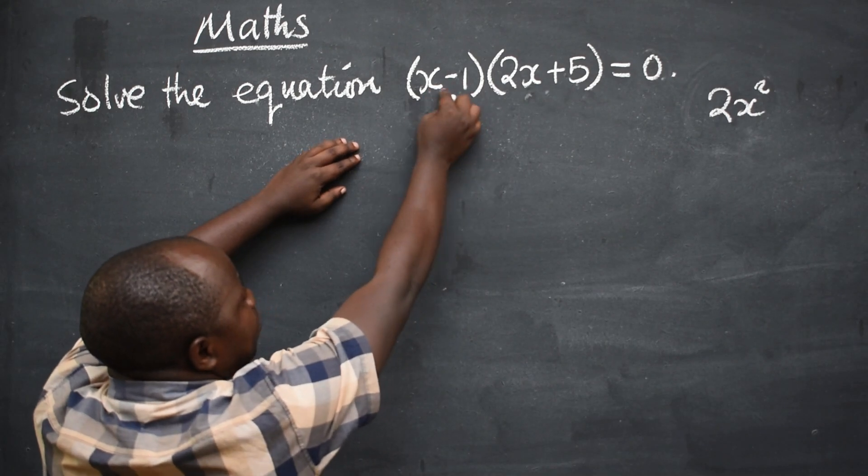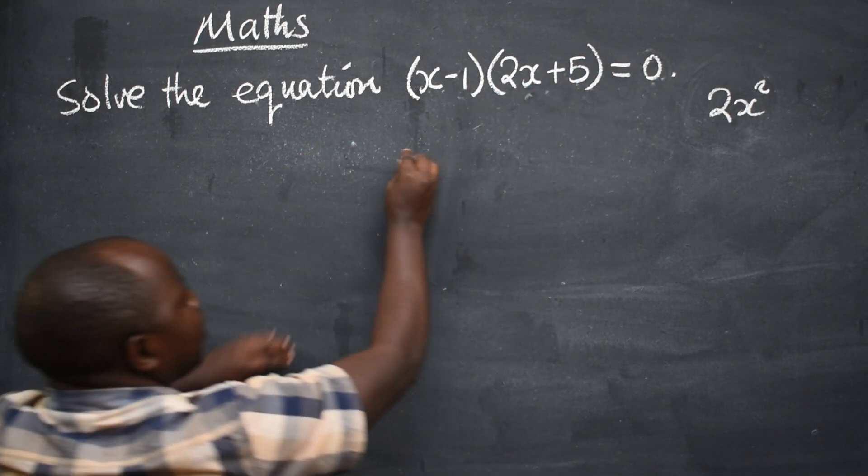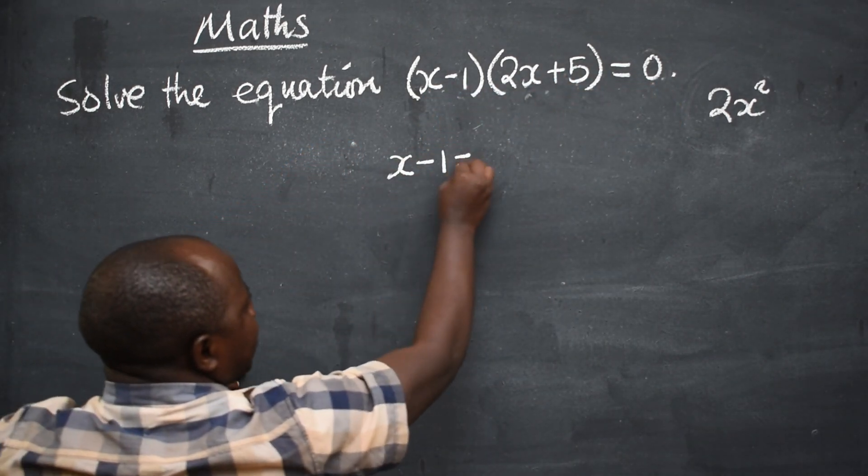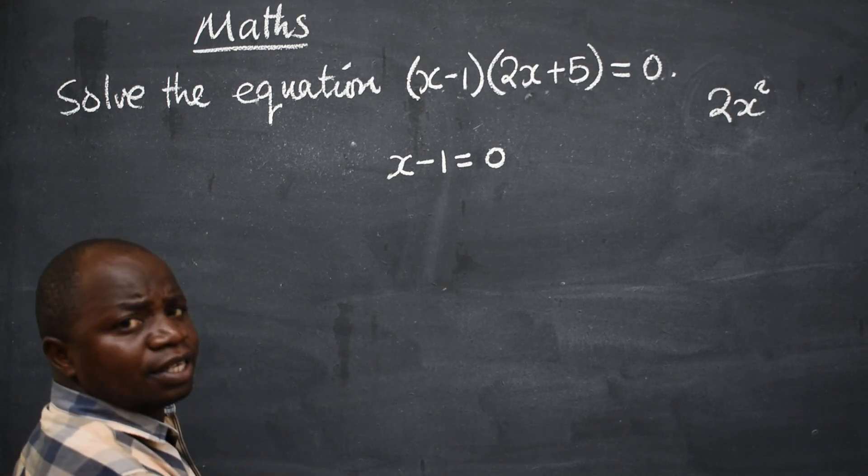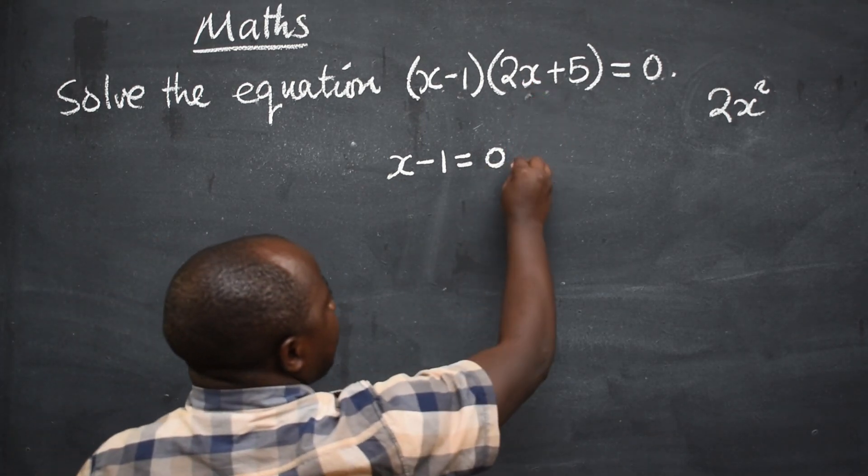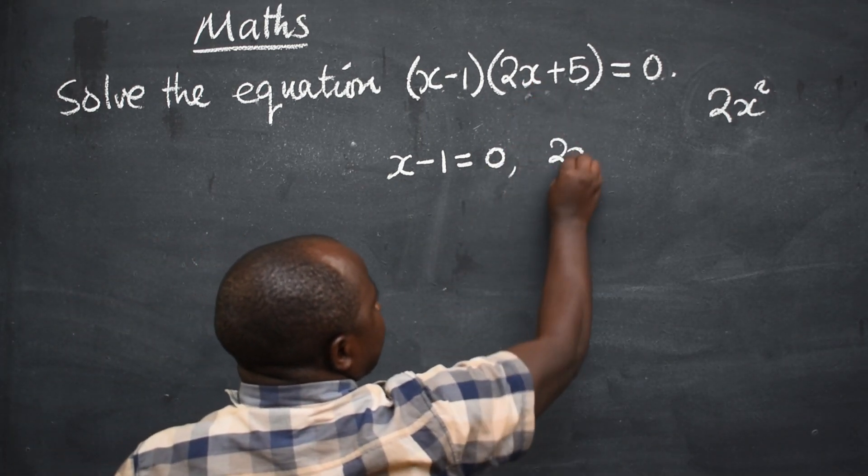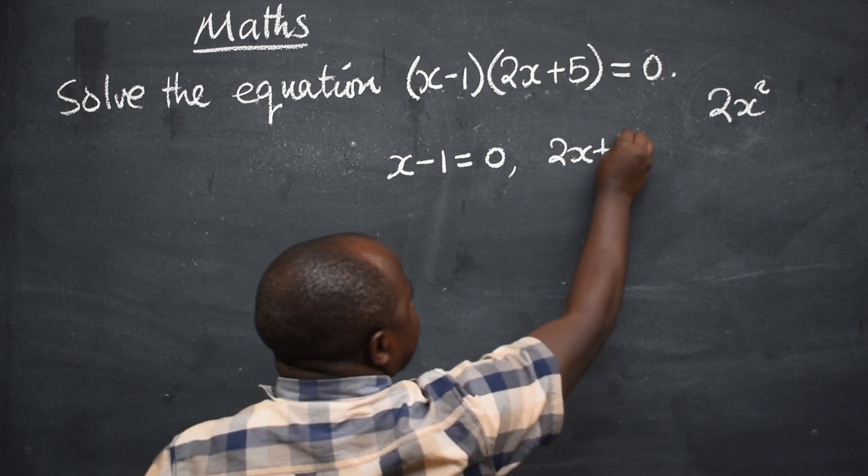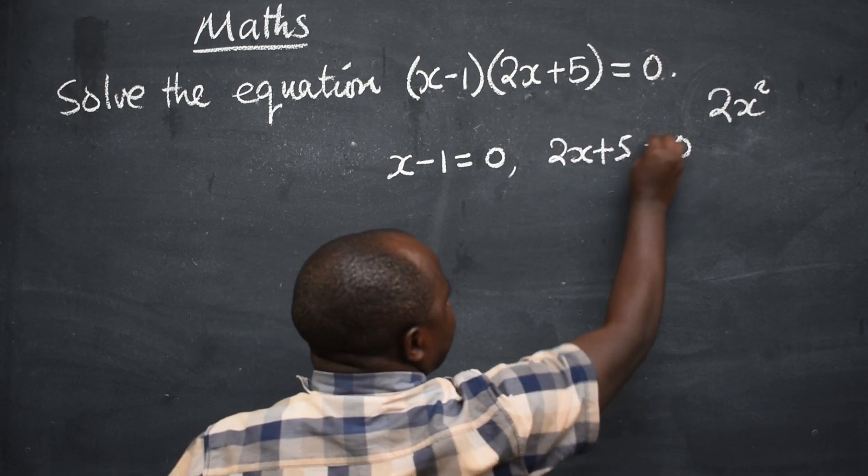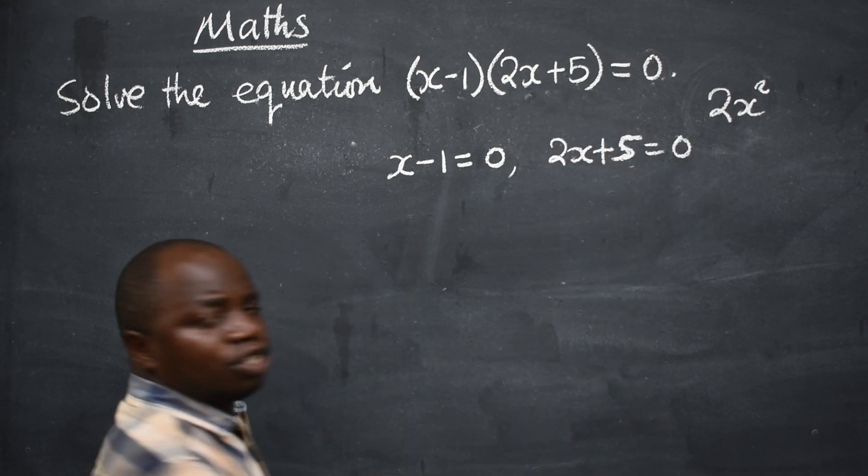So what we are going to do is, x minus 1 is equal to 0. You see that? Then the other one will be 2x plus 5 is equal to 0. That is what you need to do.